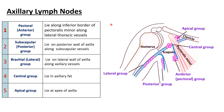Now let us look at the axillary lymph nodes. There are five groups. The first is the pectoral or anterior group, located along the inferior border of the pectoralis minor muscle; the associated vein is the lateral thoracic vein. Next we have the posterior group or subscapular group, present in the posterior wall of the axilla along the subscapular vessels.